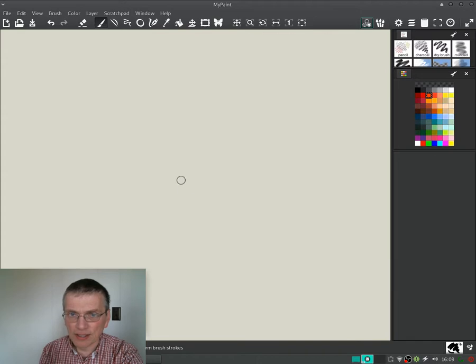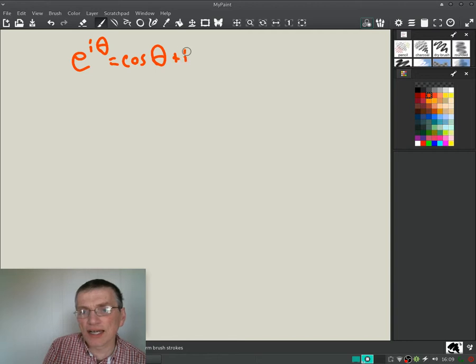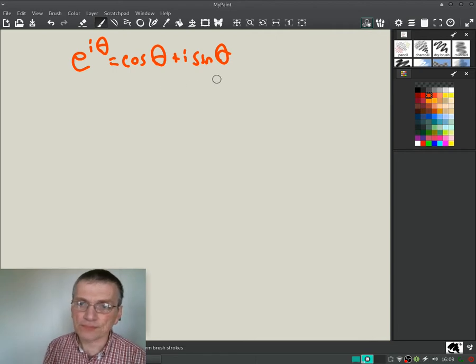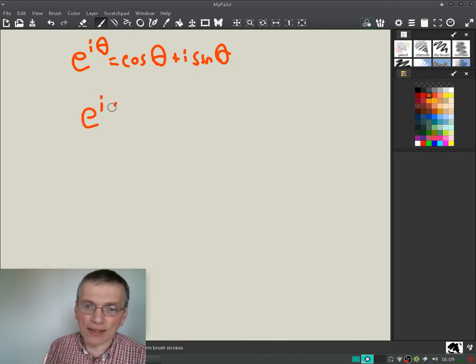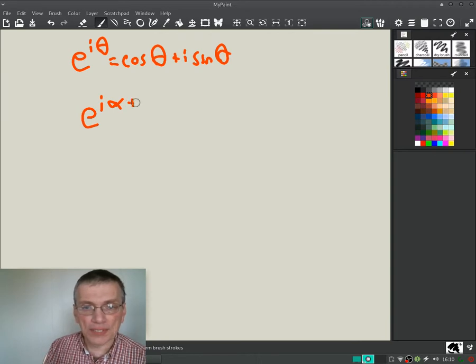Okay, so that's great, but the neat thing is we can use this equation to get the angle sum formulas. So e to the i theta equals cosine theta plus i sine theta. How about e to the i times alpha plus beta?